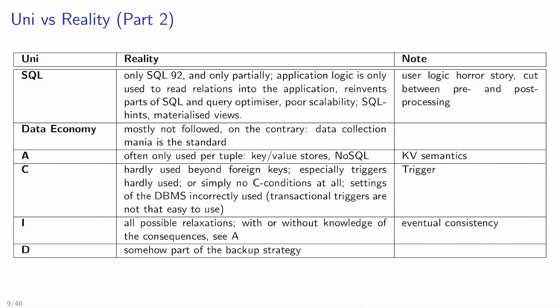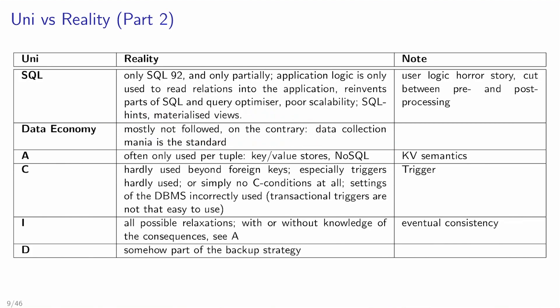Data economy means only saving and modeling the data required to implement the application. Thinking about privacy scenarios like the NSA, you may leave data away to better preserve user privacy. In practice, people don't think about that too much — if there's data you can collect, you collect it, leading to problems. Data collection mania is a standard phenomenon actually.